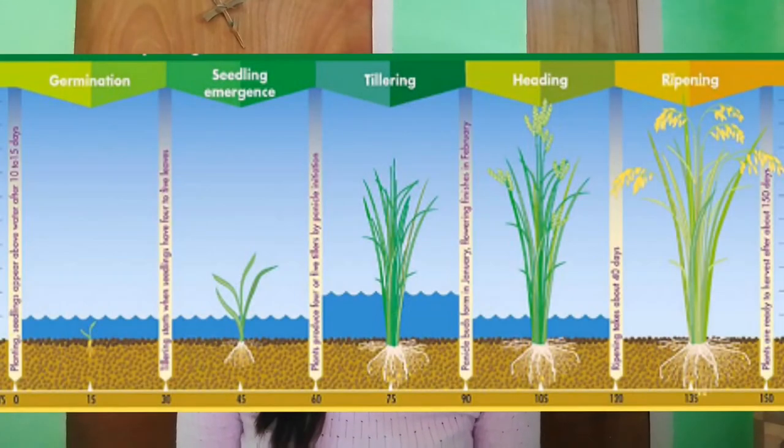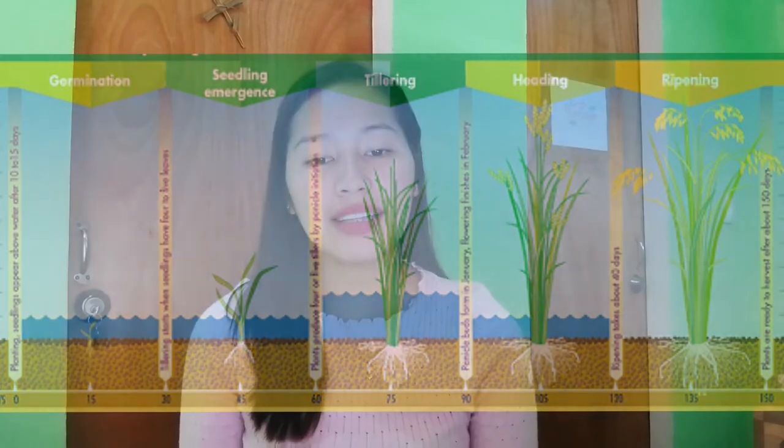The reproductive phase, in particular the grain development, is the most important stage and dictates the yield potential. Although rice grows well and produces good yield in a variety of environments, the growth duration of the rice plant is three to six months, depending on the variety and the environment under which it is grown.